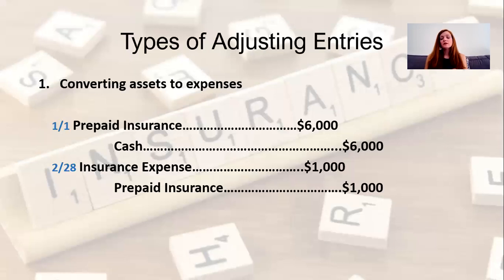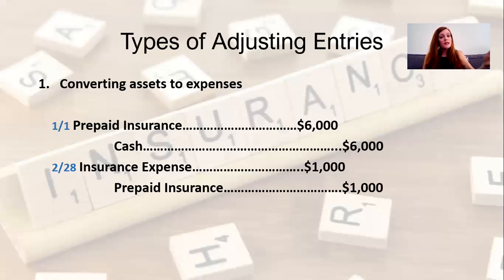This would be the same case for insurance in your personal life if you pay on a six-month basis — like auto insurance. You pay upfront, paying ahead of time, and if you cancel three months down the road you'd get three months of money back. That's why it's an asset: it's a financial benefit to you. Usually we pay ahead of time because we get a discount, or for companies they might require it.